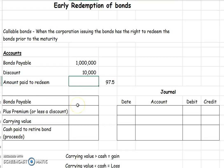So we would then take your bonds payable amount — that's the value of your bond — times 0.975, and that tells us how much we're going to have to pay in order to call these bonds early.